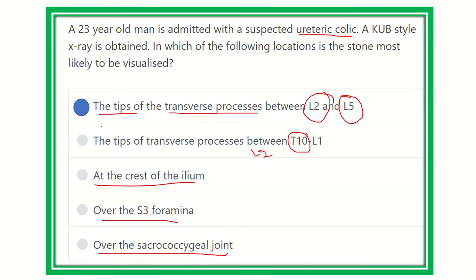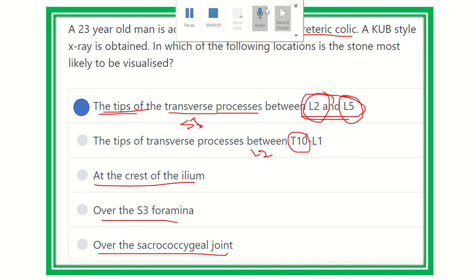So our final answer is the tip of the transverse process between lumbar 2 and lumbar 5 vertebrae — not the other options. Other landmarks along the ureter include the sacroiliac joint, the ischial spine, and the point where the ureter enters the urinary bladder. But for this question, the answer is the tip of the transverse process between L2, L3, L4, and L5 vertebrae. Thank you all.